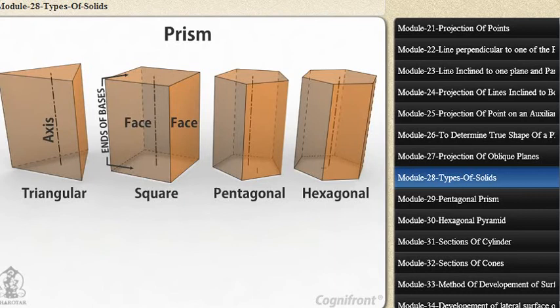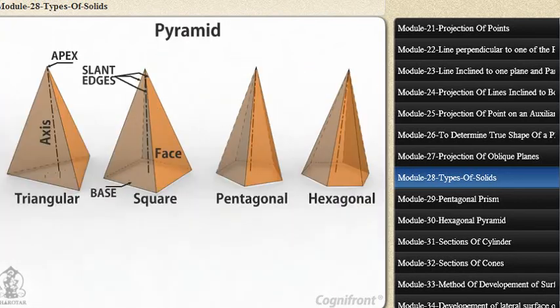Seven, pyramid. This is a polyhedron having a plane figure as a base and a number of triangular faces meeting at a point called the vertex or apex. The imaginary line joining the apex with the center of the base is its axis.